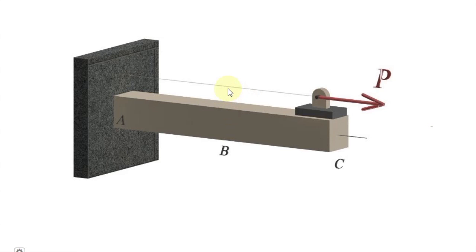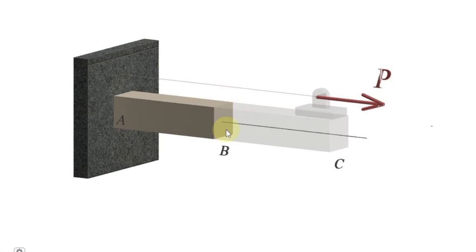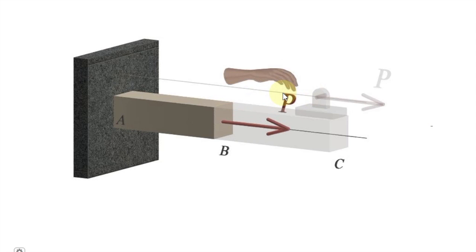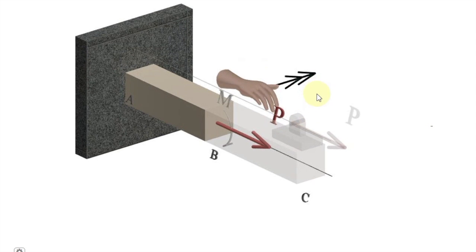Let's do this together. We cut the section passing through point B, and we need to move this force to the centroid. The first move is along the force's axis, which produces no moment. The second move is downward. To apply the right-hand rule: put the hand along the direction of the force facing downward — palm downward because that's the direction of movement. The thumb points along the horizontal axis, so the resulting moment is about that horizontal axis.